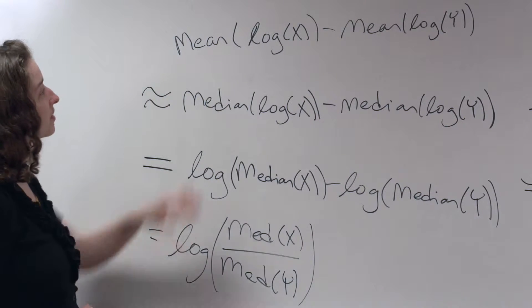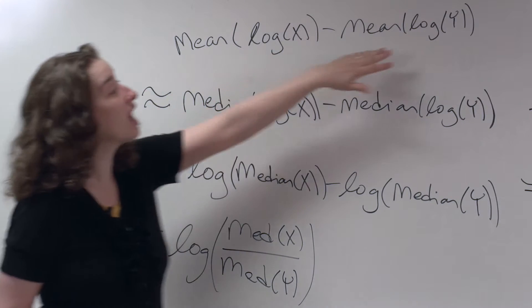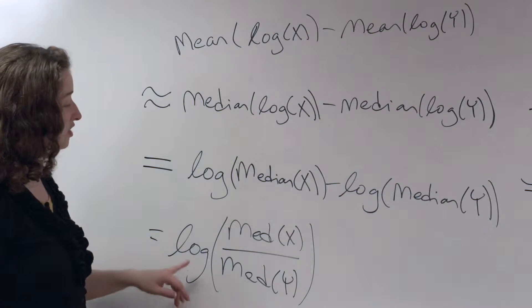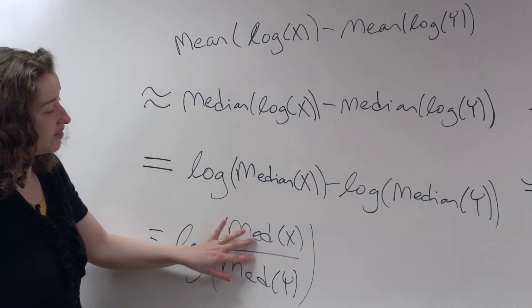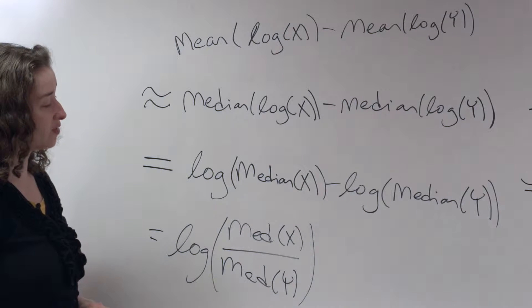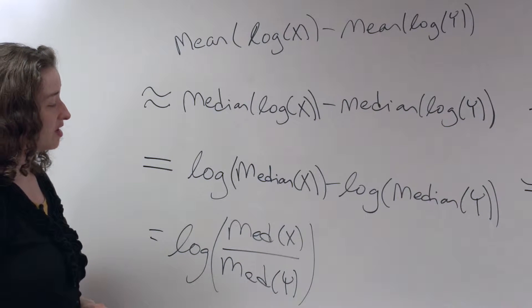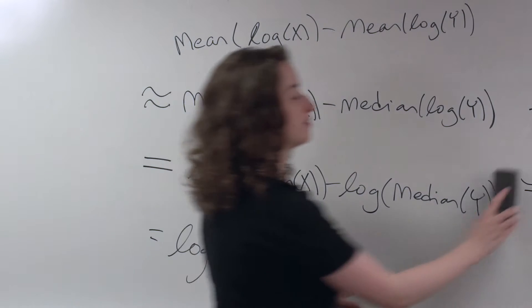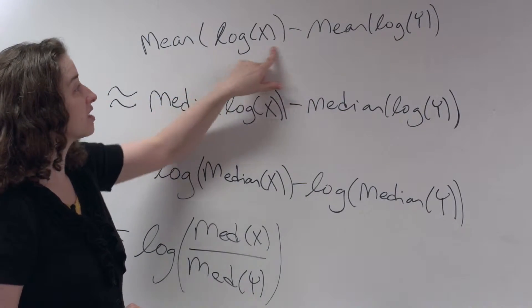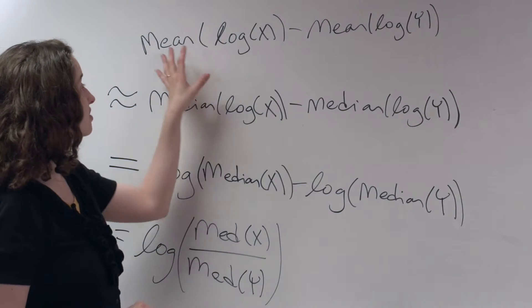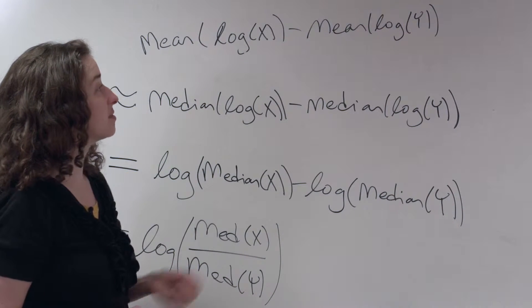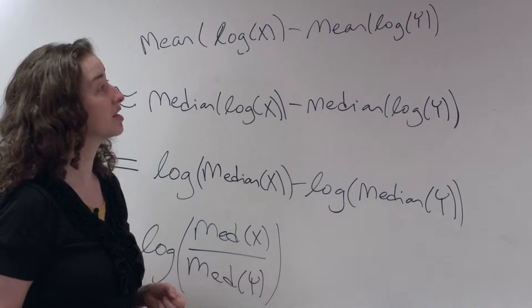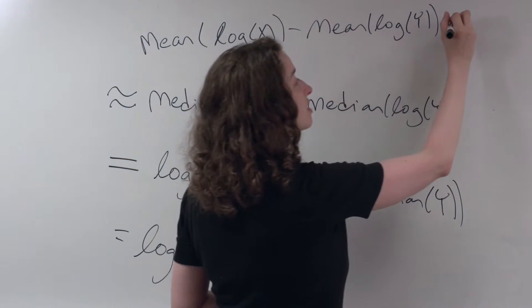What do we have written here? The difference in mean log incomes is equal to the log of the ratio of median incomes. Why is this useful? Well, remember that we have a particular number. We have a particular number that we obtained when we estimated the mean of the log income in the Midwest minus the mean of the log income in the Northeast. We have some particular number.